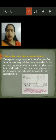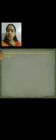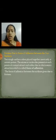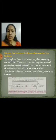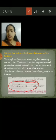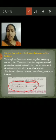Next is friction due to force of adhesion between two surfaces. When two surfaces are placed together, they meet only at certain points. The atoms or molecules present at such points of contact attract each other due to electrostatic force. These are two wooden blocks with hills and valleys, and at some points they are attracting each other — that is the force of adhesion. The force of adhesion between the surfaces gives rise to friction.